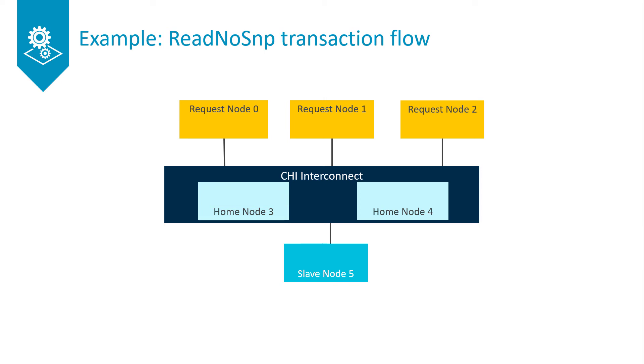And lastly, home node 3 sends the CompData response to request node 0. Request node 0 receives the data on its RX-DAT channel.